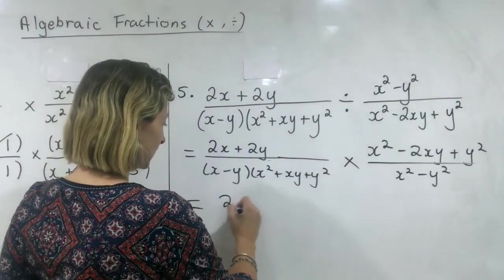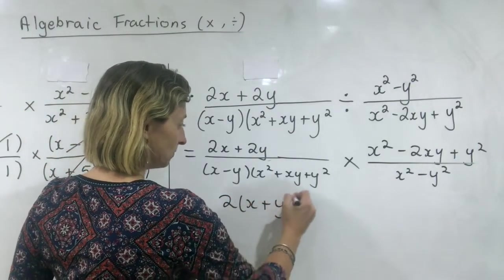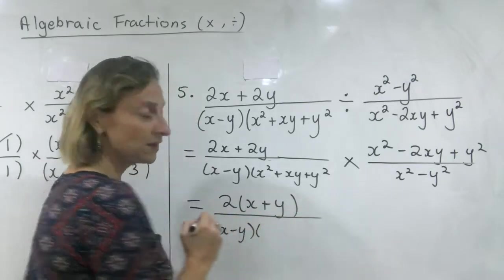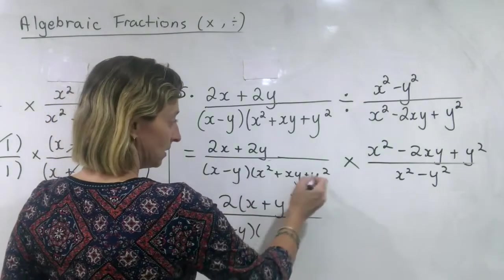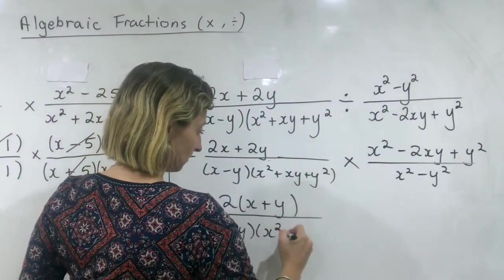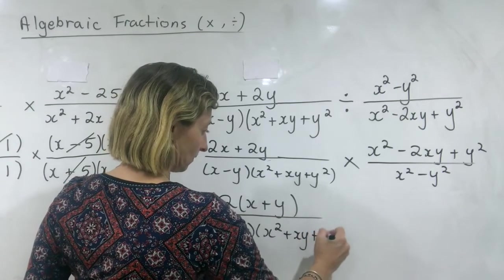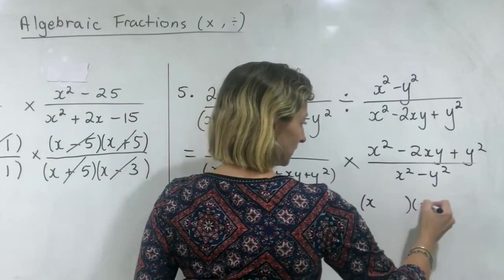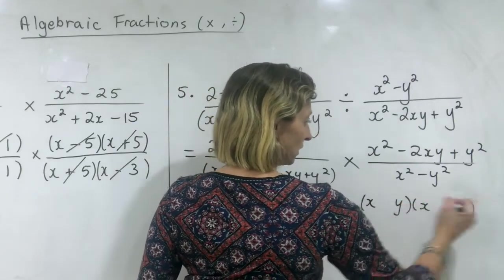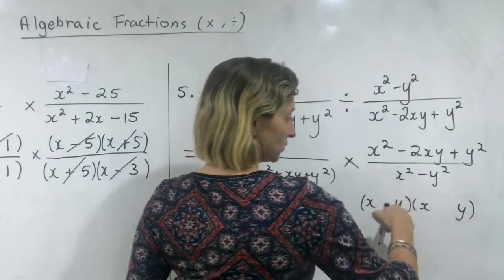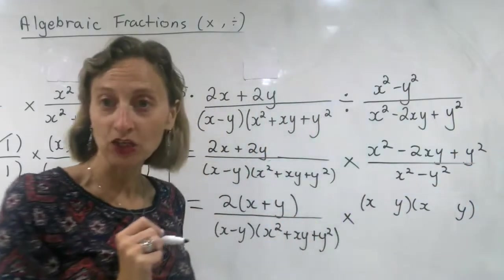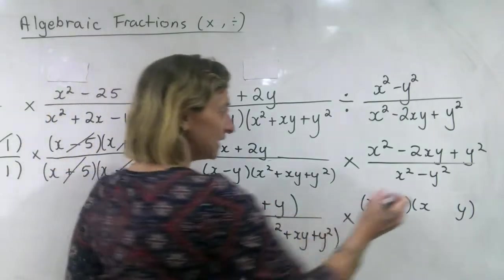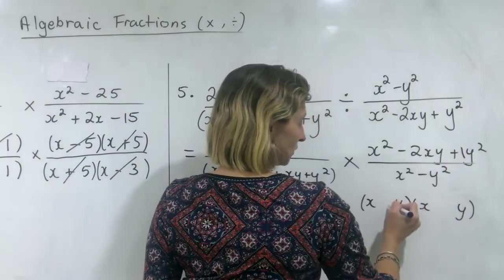I now need to factorise the top — that's just two terms, take out a common factor. Actually, looking at this one, there's nothing to do there. The top here is a trinomial — it's an easy, monic trinomial with a one in front. Don't forget: because there's a y squared, I put a y at the end and then just use the ones.